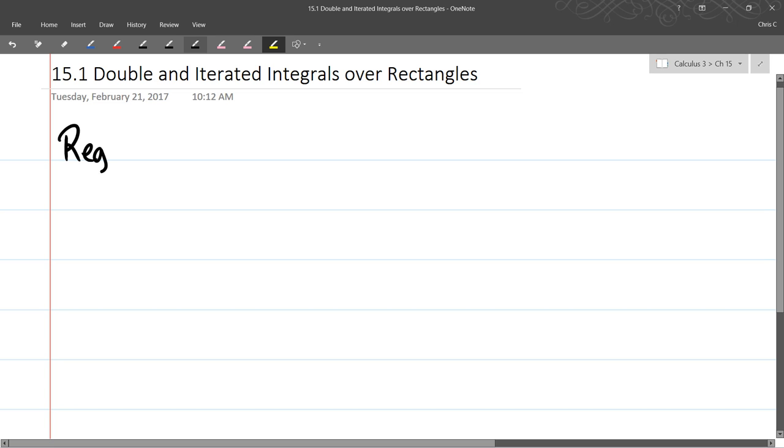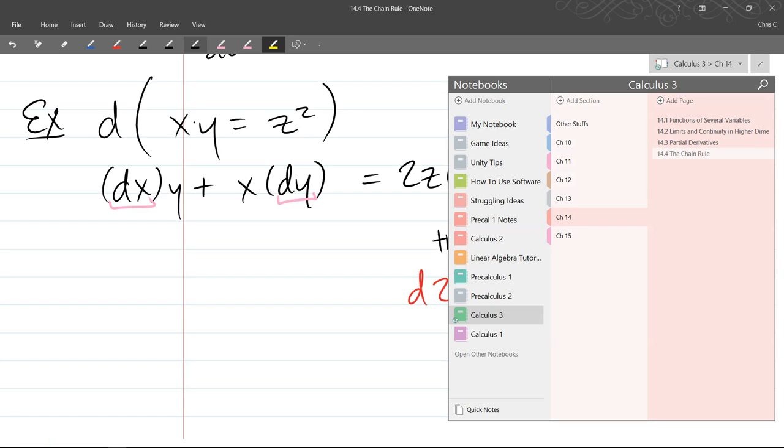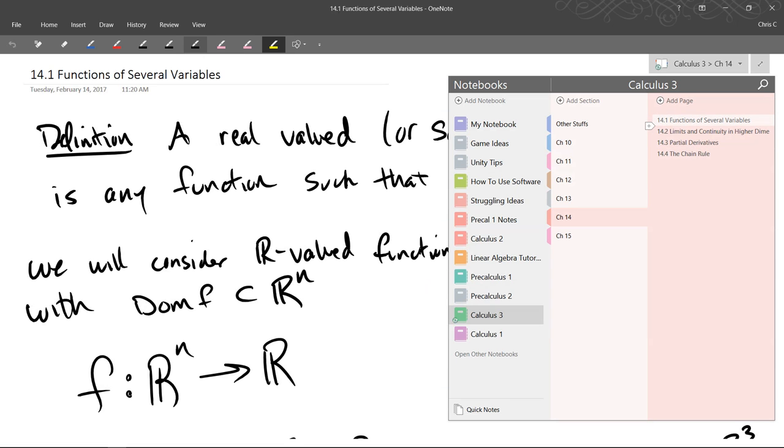So we just spent a whole chapter, or half a chapter, on derivatives. So now we're going to spend half a chapter on integrals, or anti-derivatives. So the easiest region we're going to integrate, I think we're just going to integrate over rectangles the whole time, I'm pretty sure.